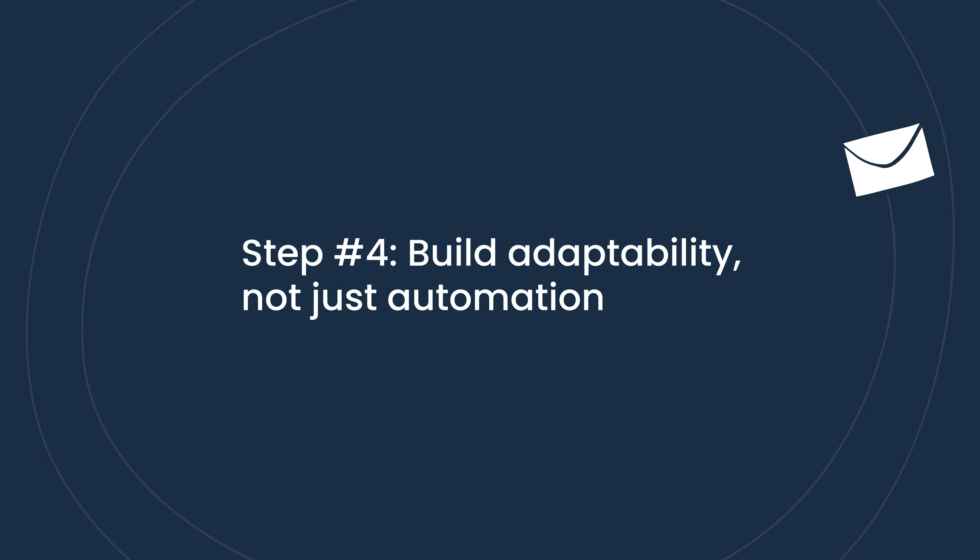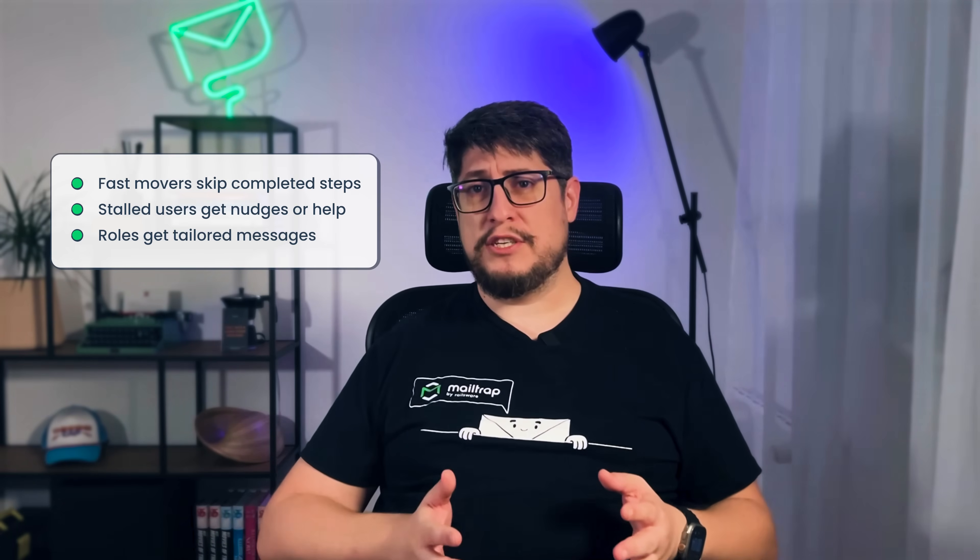Step four: build adaptability, not just automation. Even in the perfect flow, not every user follows the same path. So instead of a rigid sequence, build adaptive logic into your onboarding — fast movers skip beginner steps they've already completed, stalled users receive nudges or help from support, and different roles like admins, users, and execs all get messages tailored to their own goals. This kind of personalization keeps every message timely, relevant, and useful — because onboarding is about sending the right email at the right time.